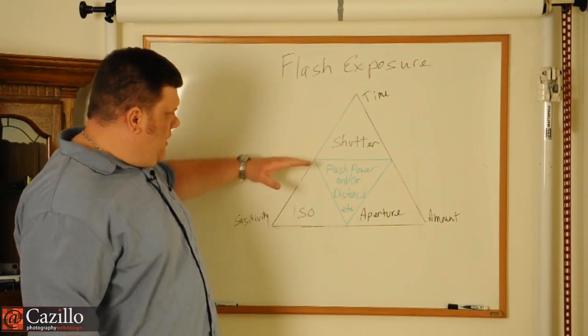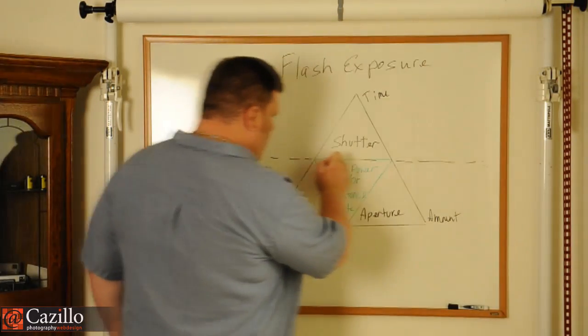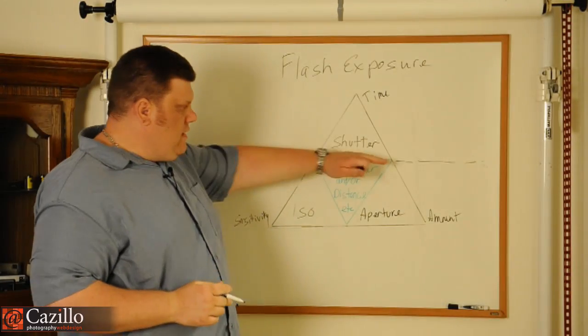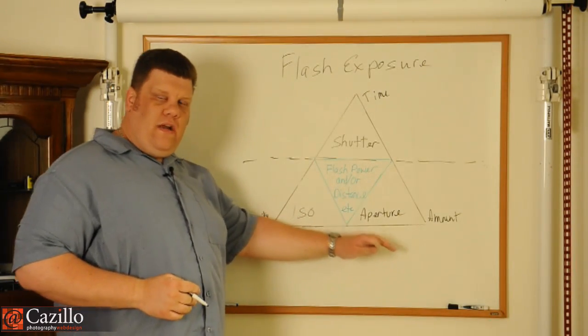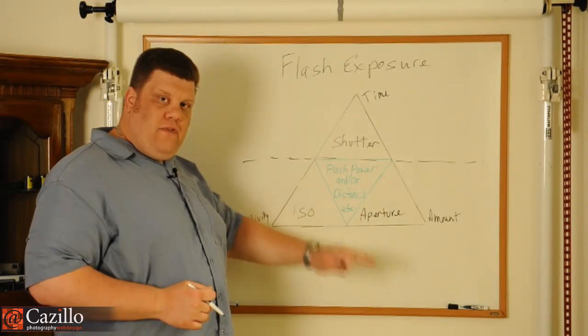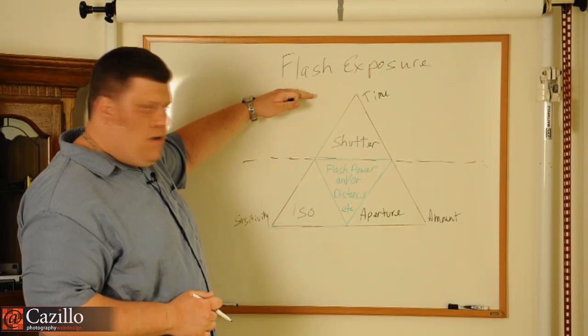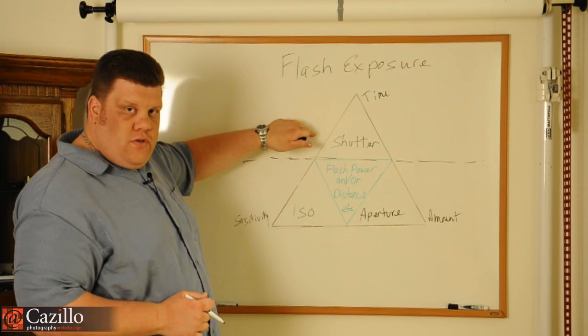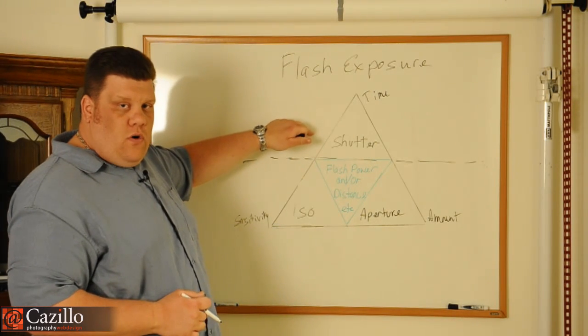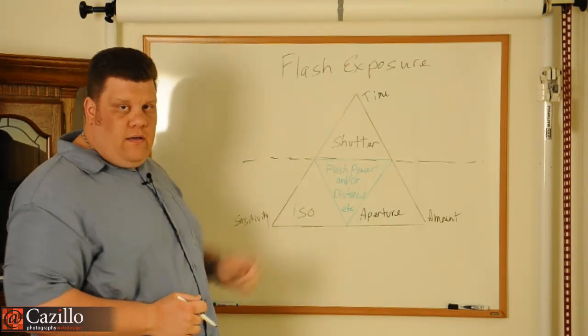But look at it this way. I'm going to draw a nice dotted line right here. Everything down here affects the flash, and everything down here, the flash affects it. Everything above this line though, which is only shutter, is only changing your ambient light in the scene.